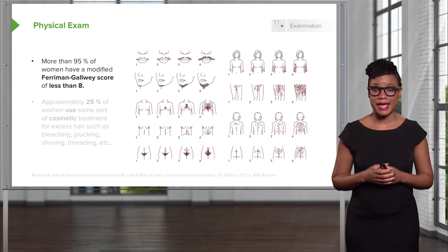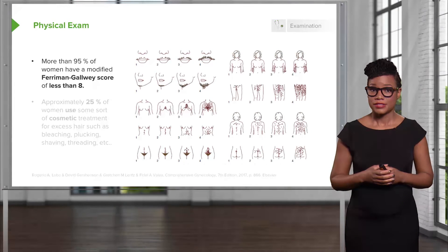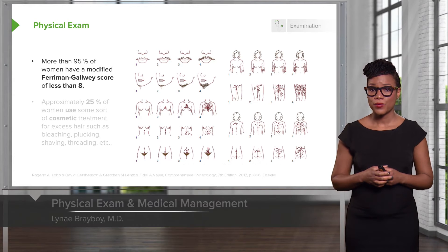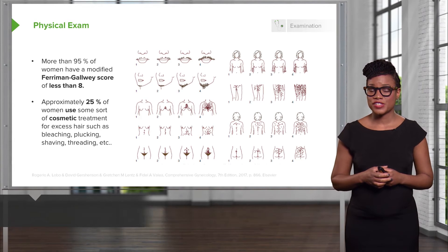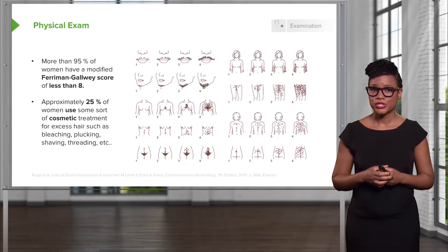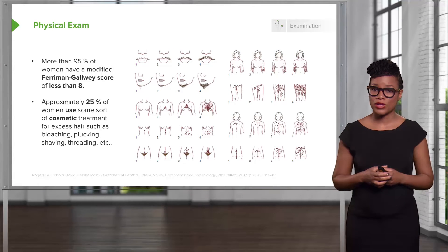Upon physical exam, you can find hair growth in a male distribution pattern. Traditionally, we used a Ferriman-Gallwey score, and a score greater than 8 was associated with hirsutism. However, 25% of patients who have hirsutism use some sort of cosmetic treatment for excessive hair, including bleaching, plucking, shaving, and threading. So this has become less useful as a clinical assessment, but it's important to note.